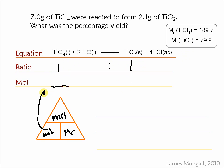So the mass which we're given in the question is 7.0, and the Mr is 189.7. That comes out as 0.0369. So if this was 100% yield, then it would give that same amount in mole of the product.